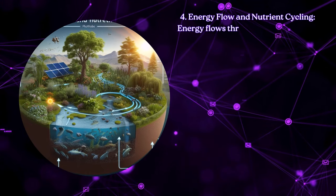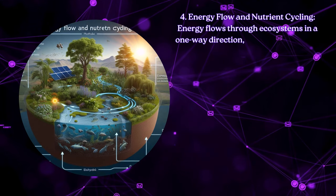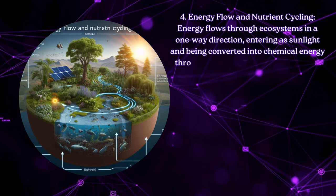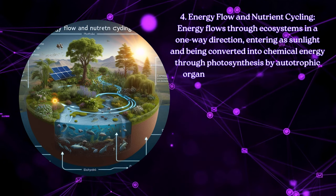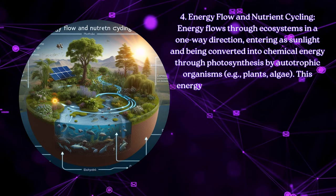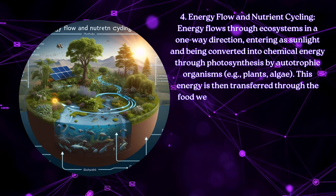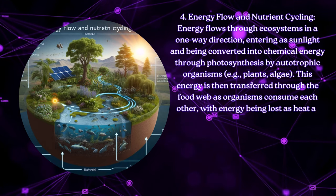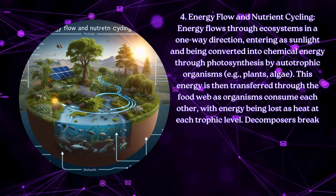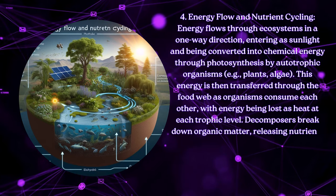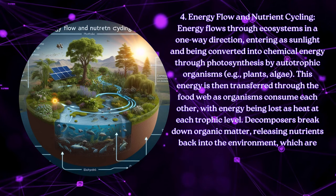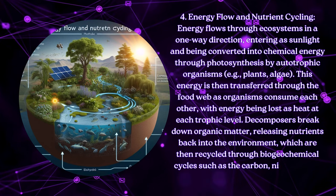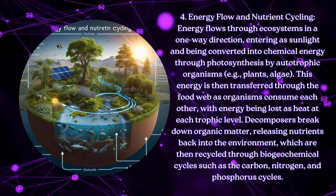Energy flow and nutrient cycling: Energy flows through ecosystems in a one-way direction, entering as sunlight and being converted into chemical energy through photosynthesis by autotrophic organisms, for example, plants and algae. This energy is then transferred through the food web as organisms consume each other, with energy being lost as heat at each trophic level. Decomposers break down organic matter, releasing nutrients back into the environment, which are then recycled through biogeochemical cycles such as the carbon, nitrogen, and phosphorus cycles.